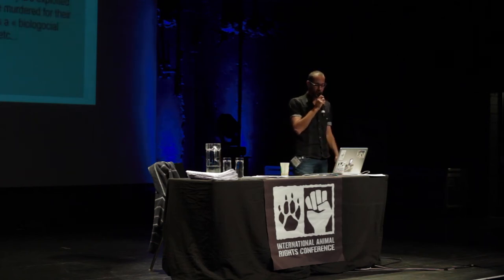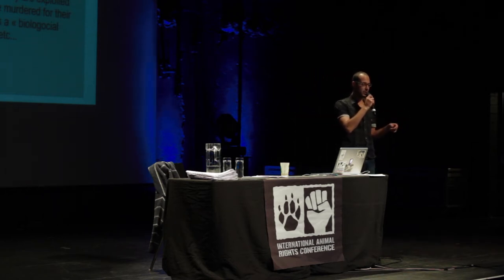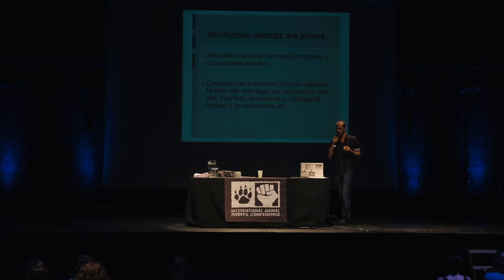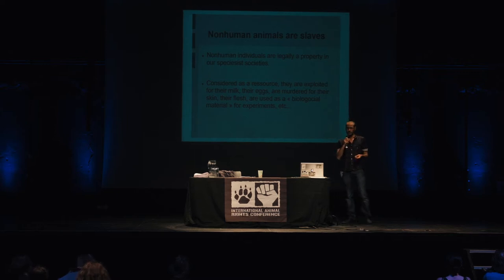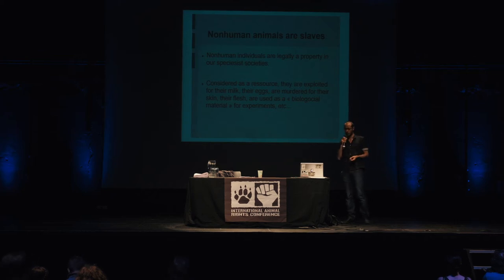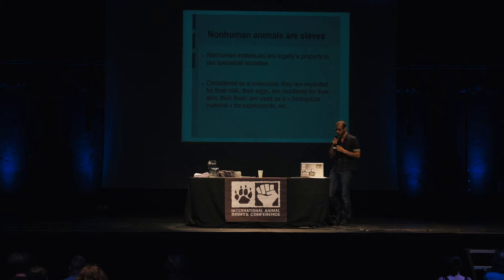First, I will make a parallel between the condition of animals and what the anti-slavery movement did. I do this because non-human individuals are considered legal property in our society — a resource. Our speciesist society kills them for their milk, eggs, flesh, and skin, and uses them as biological material. So they are really slaves, and that is why I use this comparison.